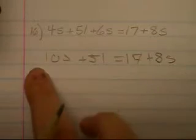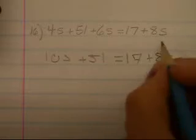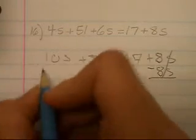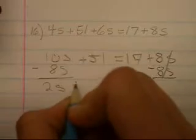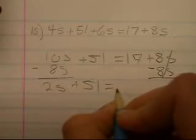You would like to combine terms of 10s and 8s. So subtracting 8s would cross cancel, and then you would subtract 8s from 10 and get 2s plus 51 equals 17.